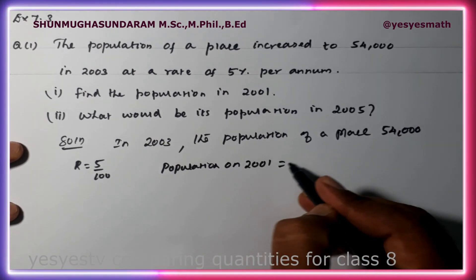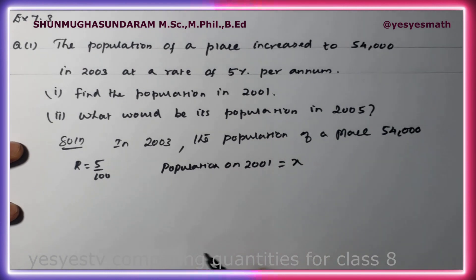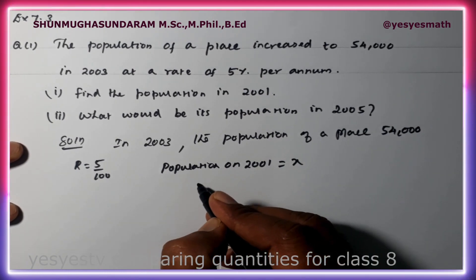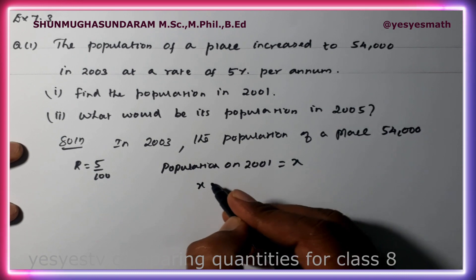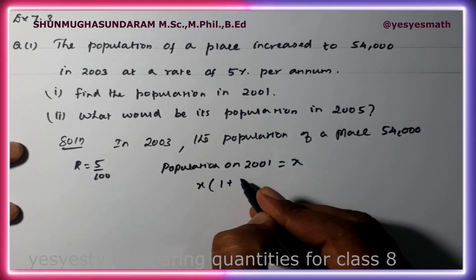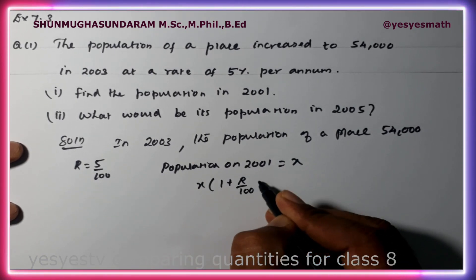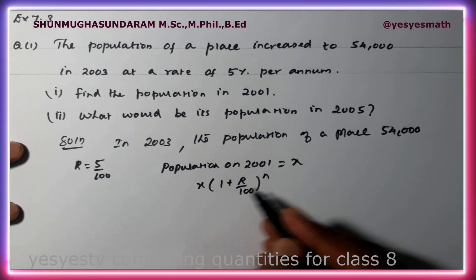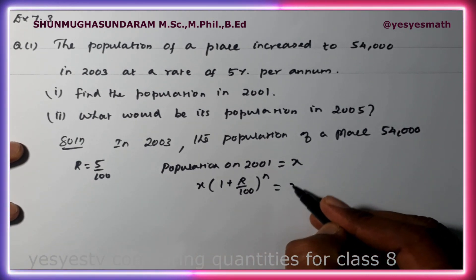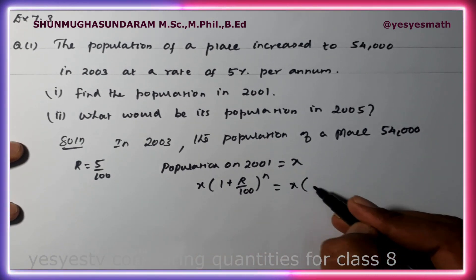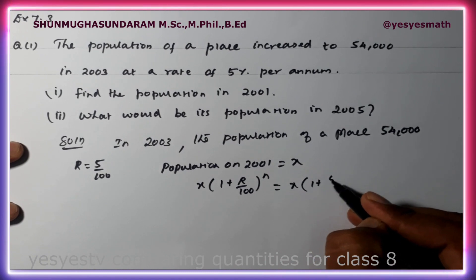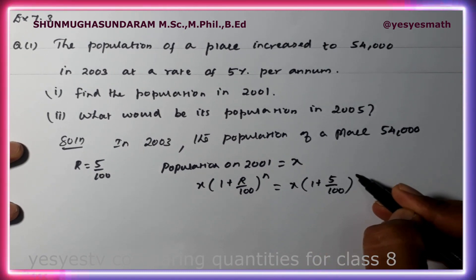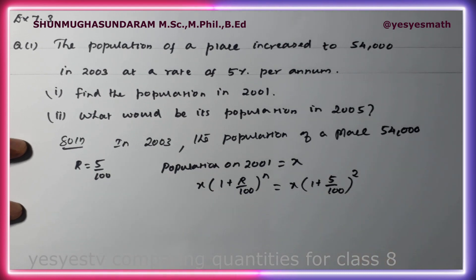We use the compound interest formula: principal amount x into 1 plus r by 100 to the power n. The rate of interest is 5 by 100, and the number of years is 2.